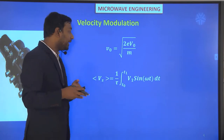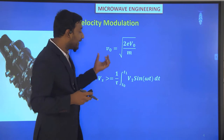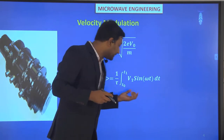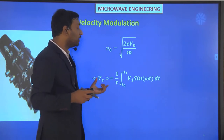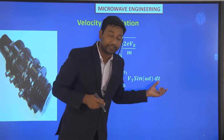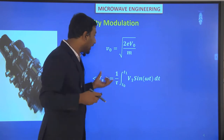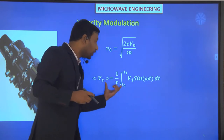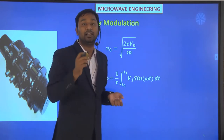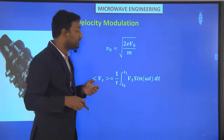The velocity of the electron V0 equals the square root of 2eV0 divided by m, where m is the mass of the electron, e is the charge of the electron, and V0 is the applied DC voltage. We apply some voltage to the buncher cavity — that average voltage is given through the buncher cavity, and due to that voltage, velocity modulation occurs.